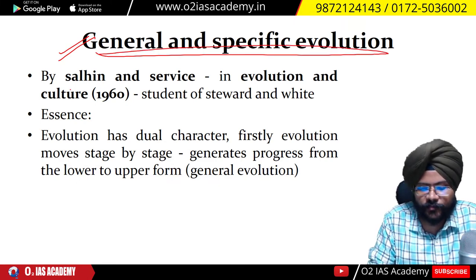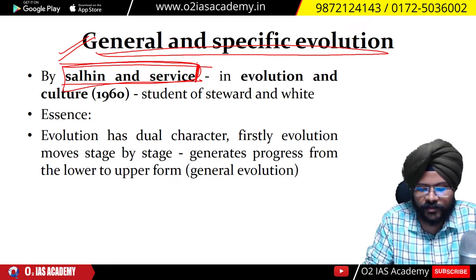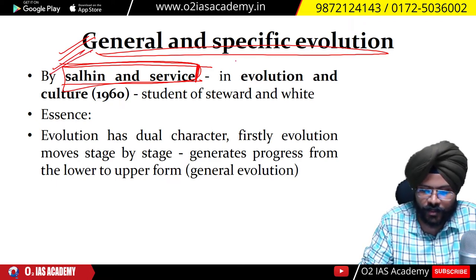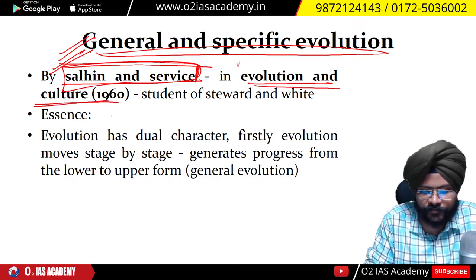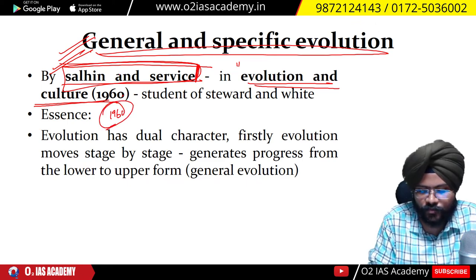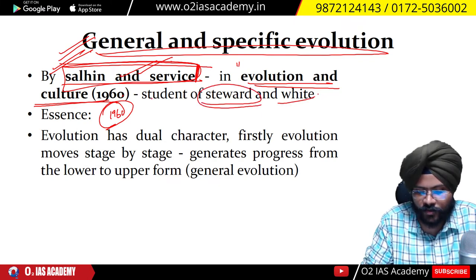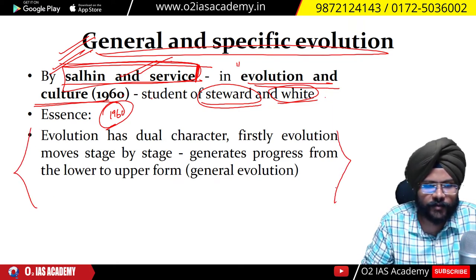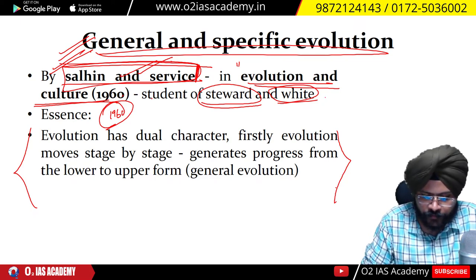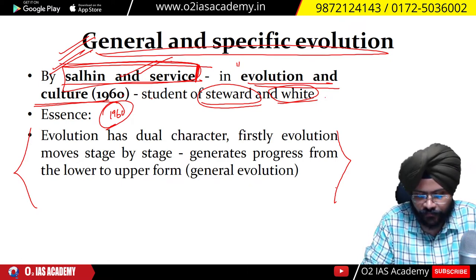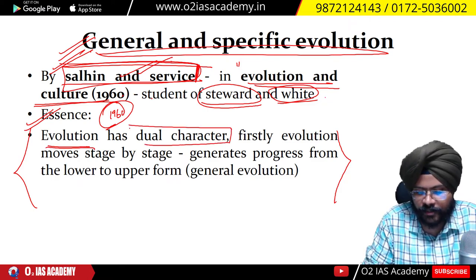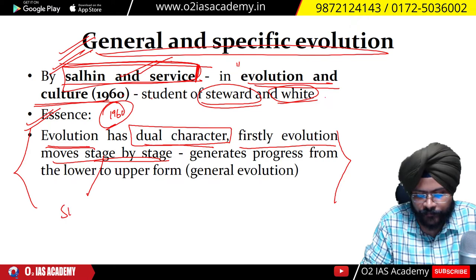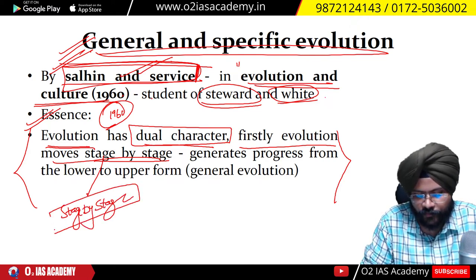The general and specific evolution was given by Sahlins and Service. Their work was 'Evolution and Culture' (1960), written by Sahlins and Service — both were students of Julian Steward and White. The essence of their work is that evolution has a dual character: the first is general evolution, and the second is specific evolution. General evolution moves stage by stage.